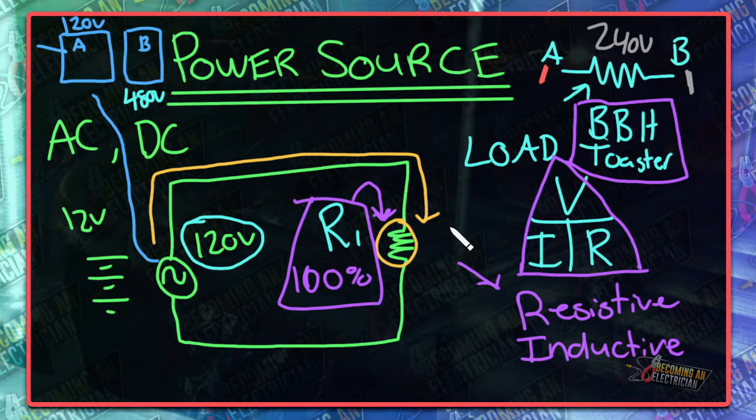So we know that we have 120 volts right? Let's just keep it simple. Let's just say that we have 10 ohms here right for R1. So we put 10 ohms right there and then we know that we would have 12 amps.